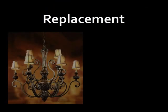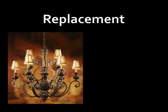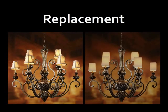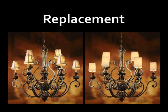We can replace repeated objects in one image with other objects from another image, while preserving the relative locations and depths of the original objects. Here we replace lamps in an image with a different kind of lamp.